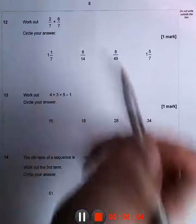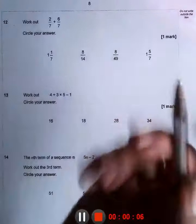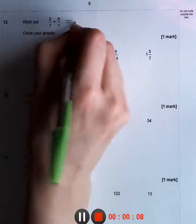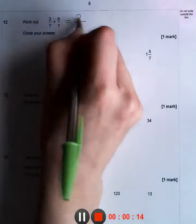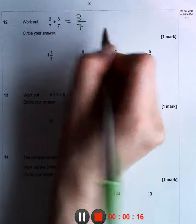2 over 7 plus 6 over 7. We need to circle the right answer. In addition, we leave the denominator as is and then add the numerators. 2 plus 6 equals 8.